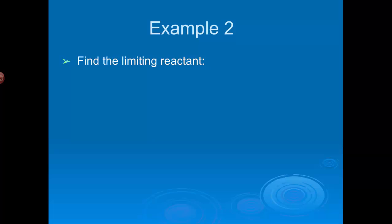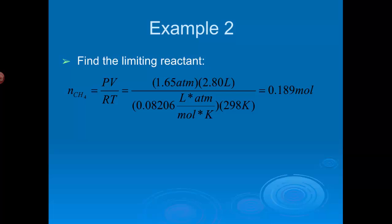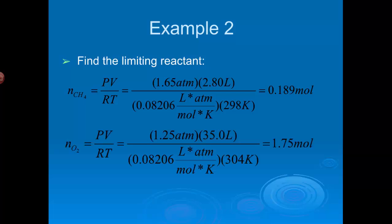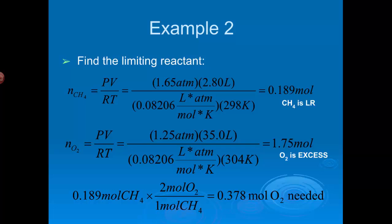First thing we have to do is find the limiting reactant. Because we have information about both reactants. Whenever you're given information about both reactants, you need to know which one is limiting. So, I need to know how many moles of each reactant I have. Well, to find the moles of methane, I'm going to use PV equals nRT. I'm going to solve for n. n is equal to PV over RT. Pressure I was given is 1.65. The volume is 2.80. R is R. And the temperature in Kelvins is 298. It gives me 0.189 moles. I've got to do the same thing for oxygen. So, I solve the same problem. I get 1.75 moles of oxygen. So, now the question is, which is the limiting reactant? Given that the mole ratio is 1 to 2, you should be able to sort of figure it out. But if you need to prove it, this is how you do it. 0.189 moles of methane, 2 moles of oxygen required for every 1 mole of methane. That means we need 0.378 moles of O2. Well, we have 1.75 moles of O2. We have more than we need. That must mean that methane is the limiting reactant and O2 is in excess. Okay?